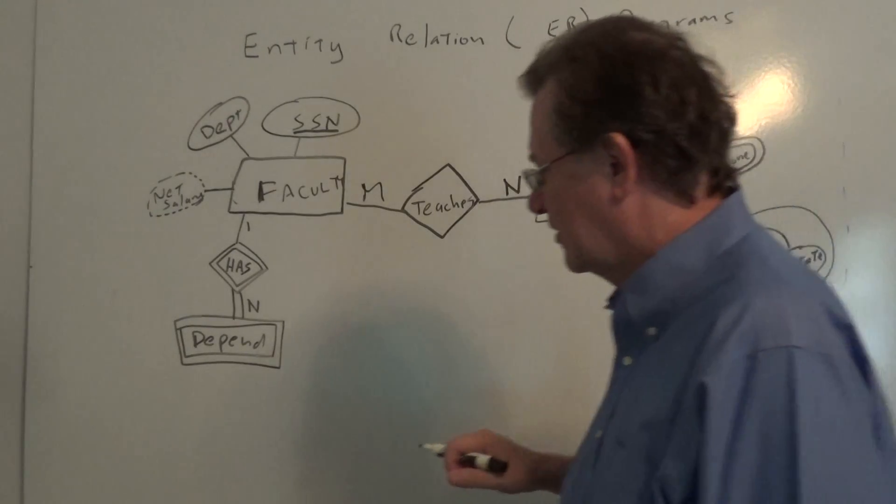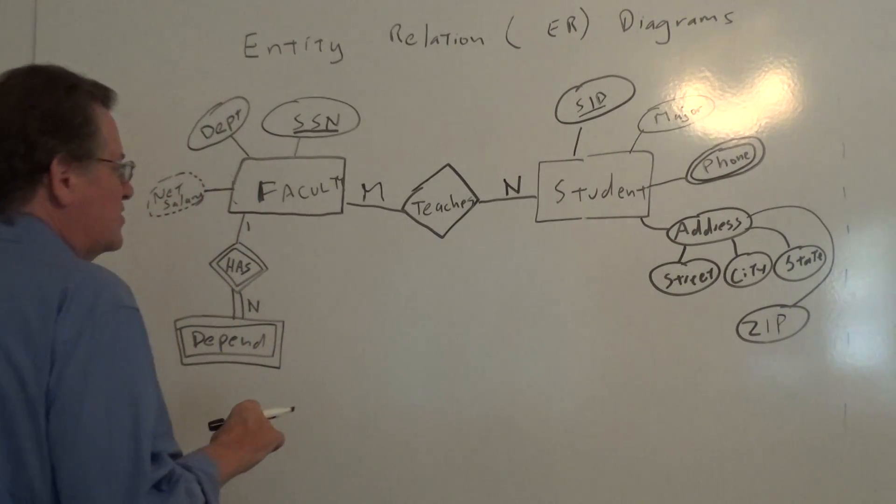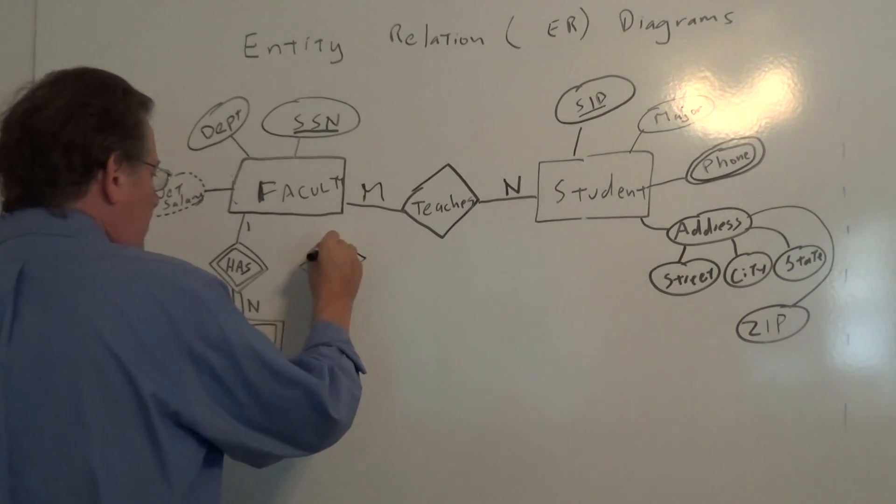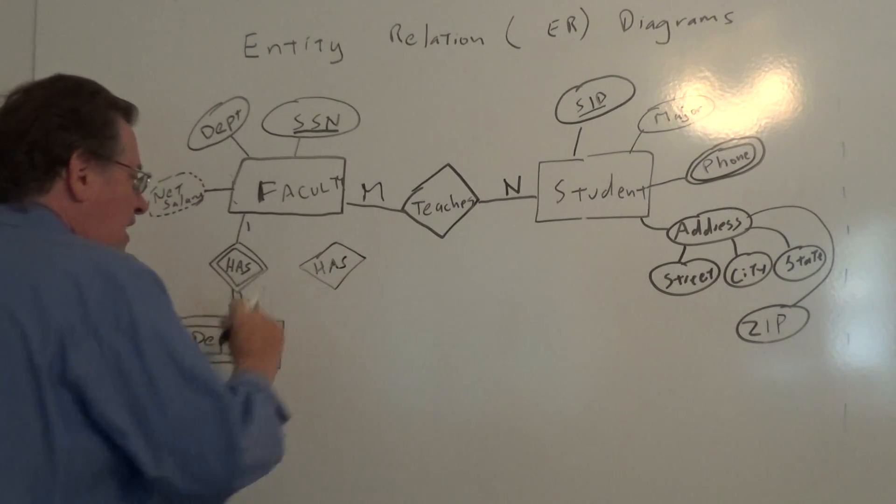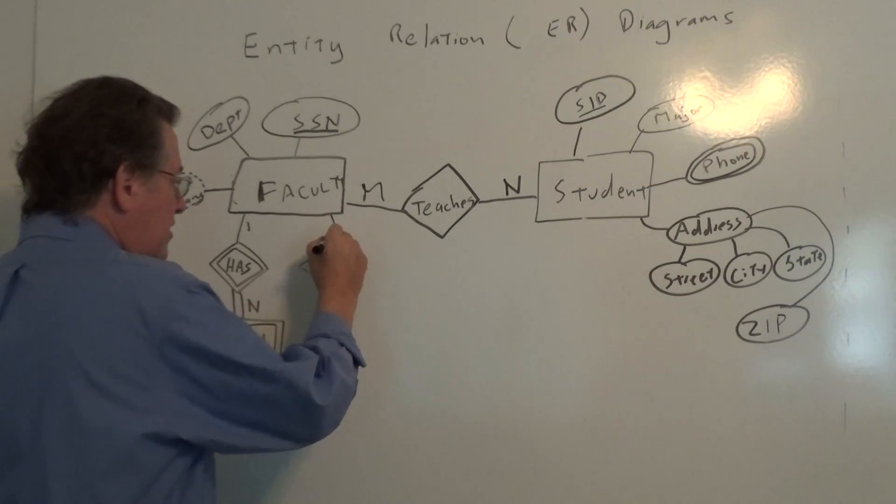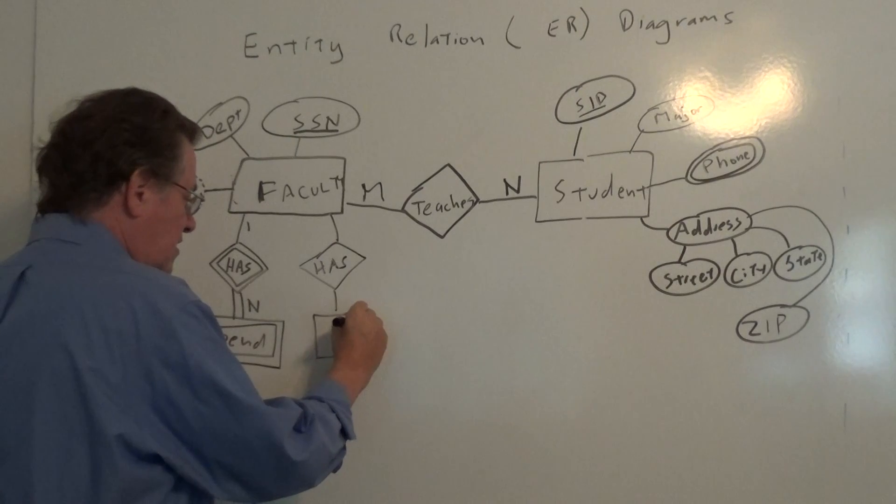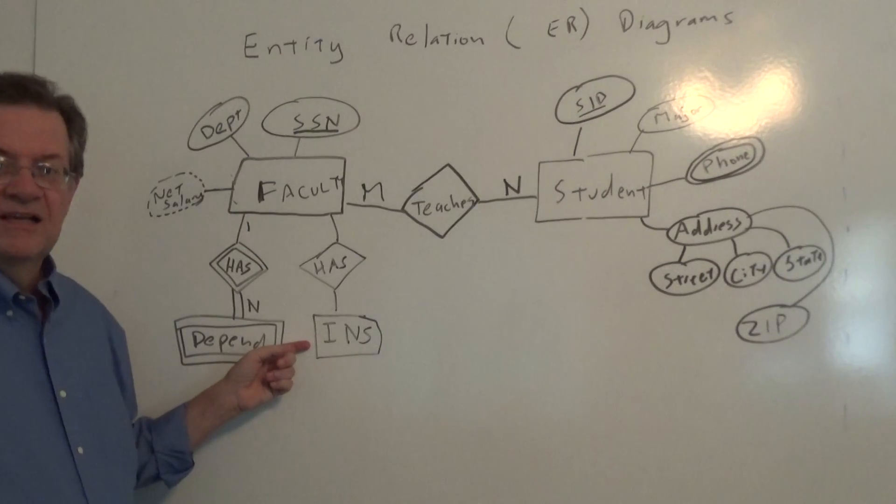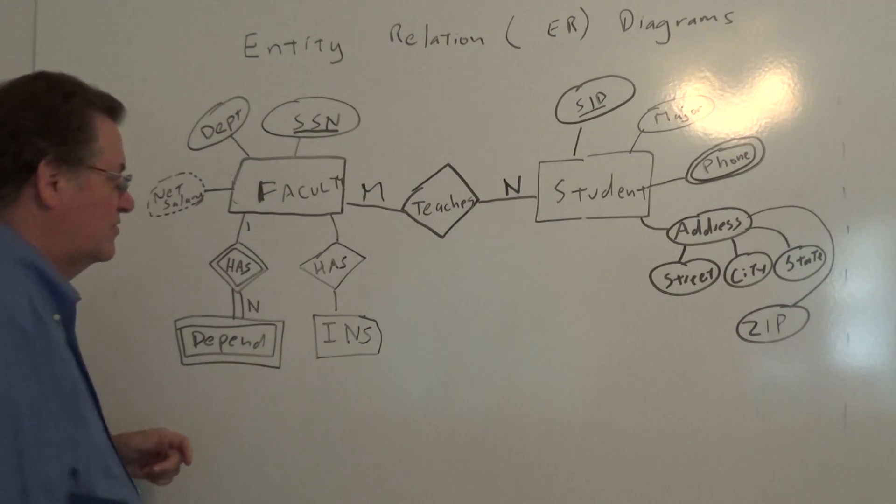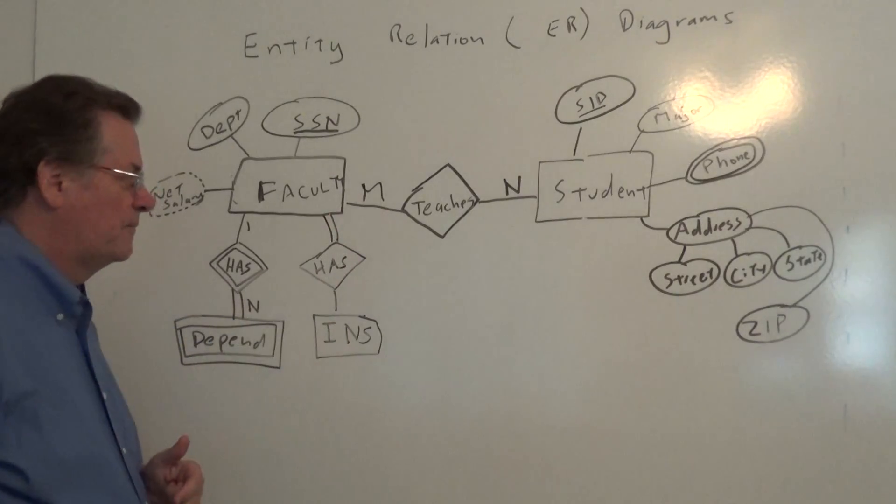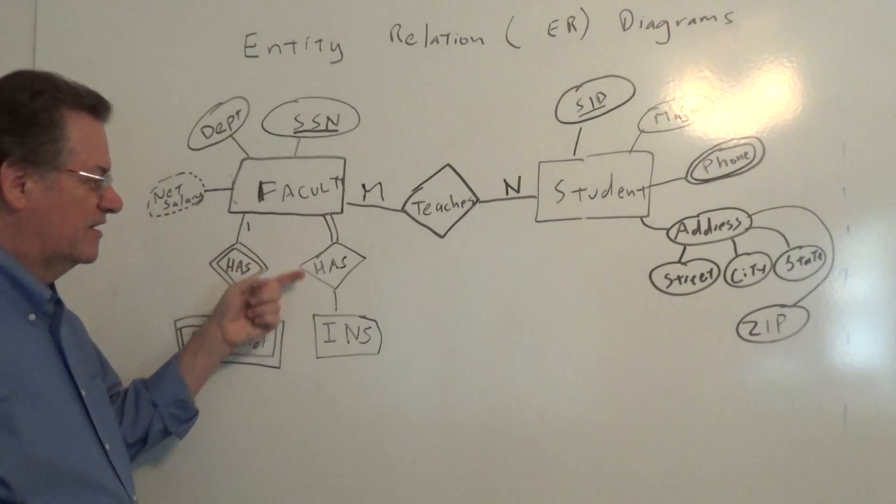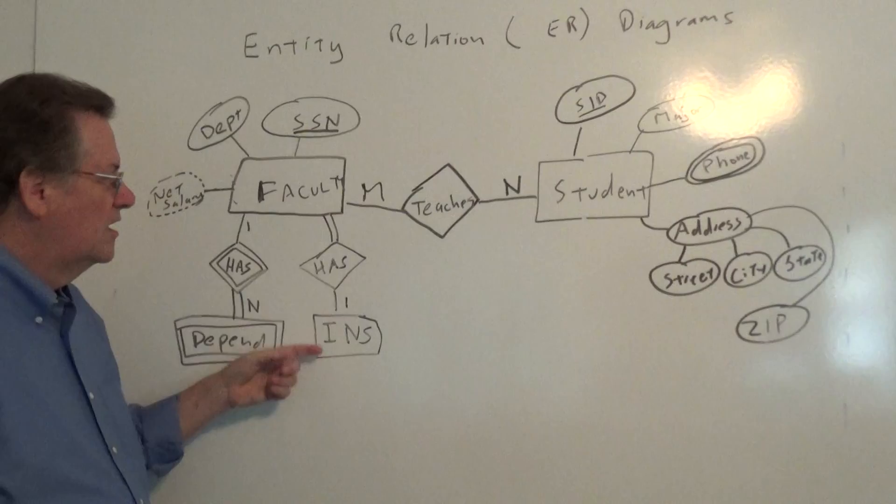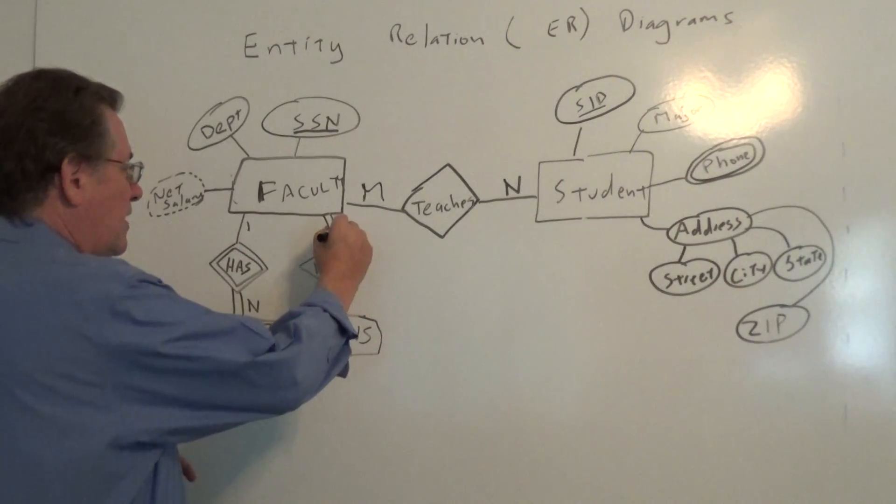Well let's continue with some other features here. One of which, let's say a faculty member has insurance. Well we might use the word has and we have faculty has insurance. I'll just abbreviate it now. Now this is an example, let's say a company requires all faculty have to have insurance, so we'd have a double line there, and the idea is a faculty member has one insurance provider, and that one insurance provider, let's say Blue Cross, might provide insurance to many faculty members.